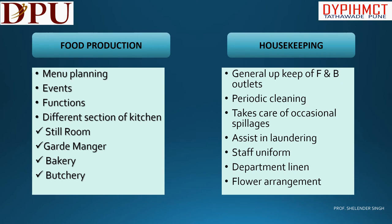With Food Production, the food and beverage department coordinates in various ways, including menu planning, events, functions, and different sections of the kitchen such as still room, garde manger, bakery, and banquet kitchen. With Housekeeping, coordination includes general upkeep of F&B outlets, periodic cleaning, taking care of occasional spillages, assisting in laundering, staff uniforms, department linen, and flower arrangement.